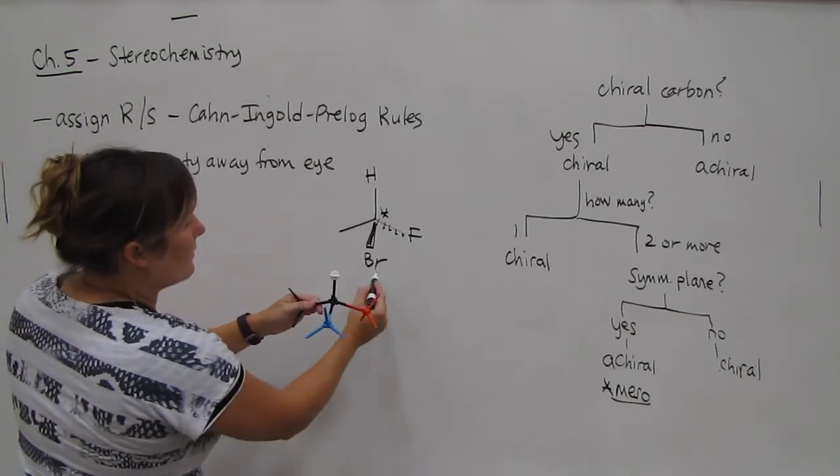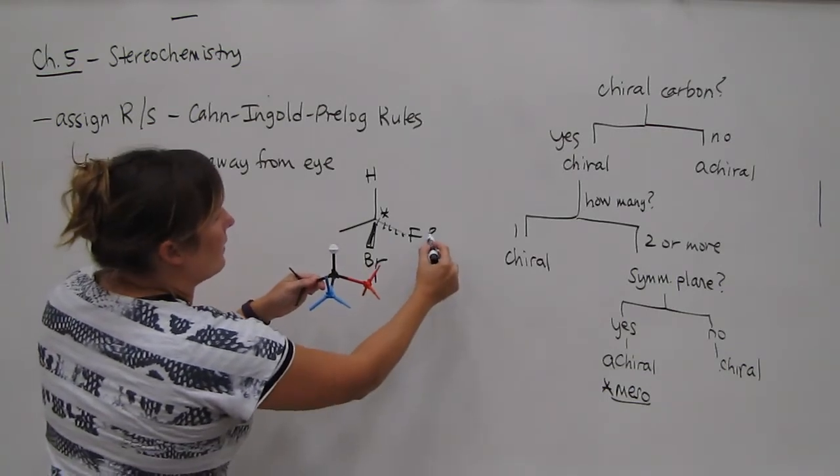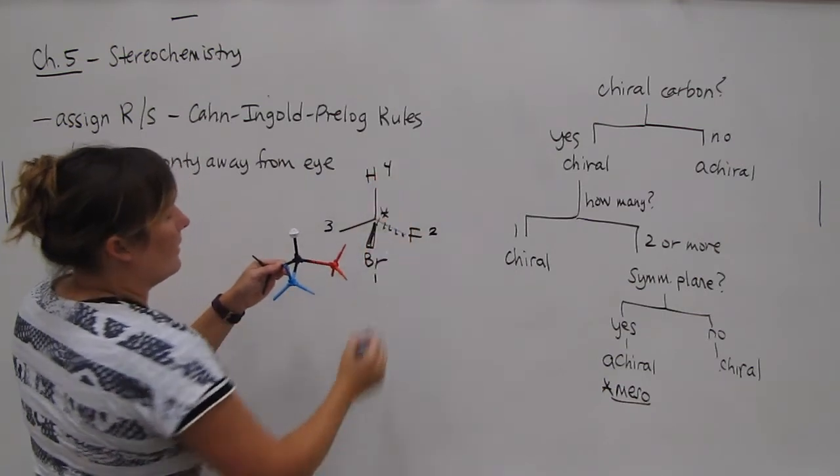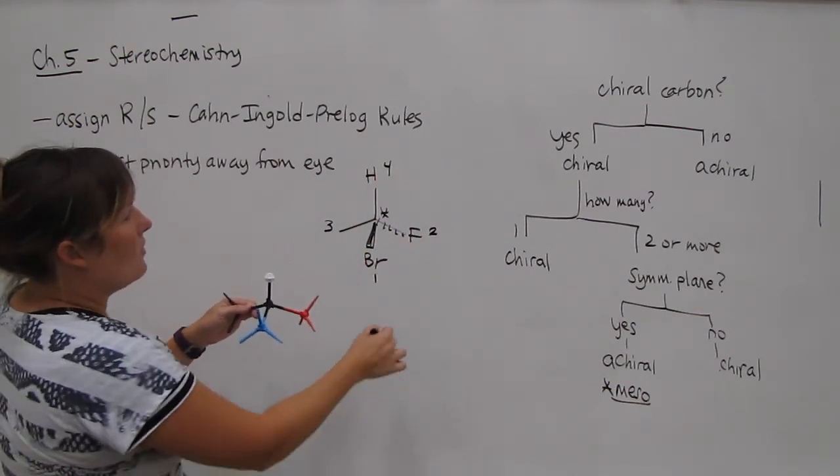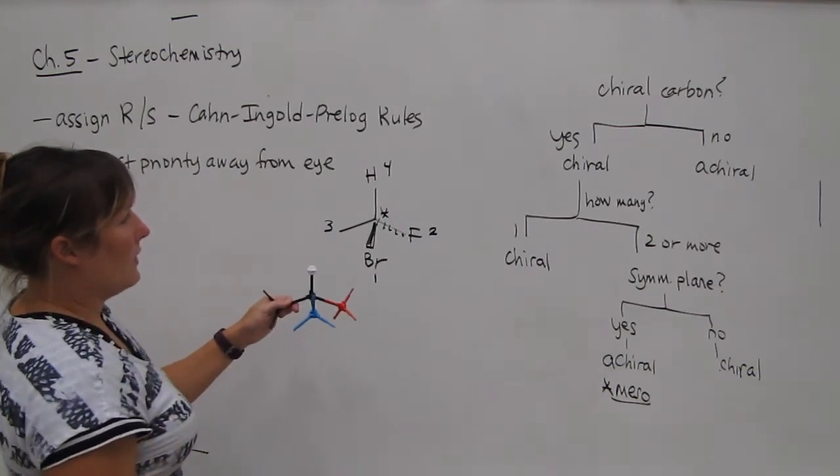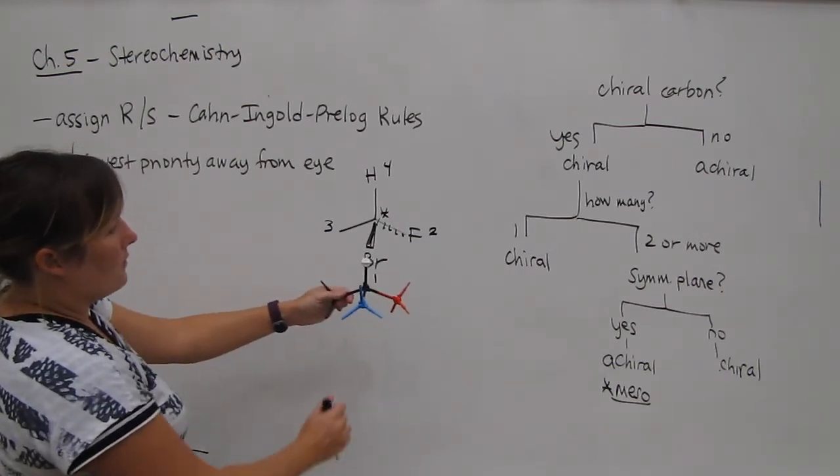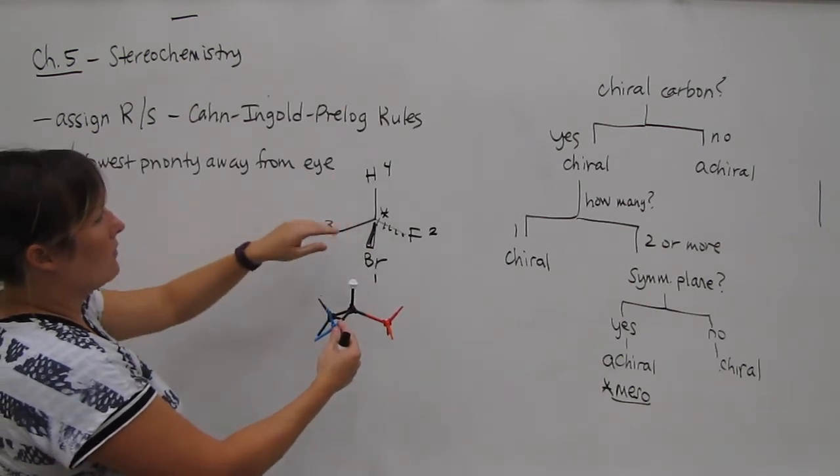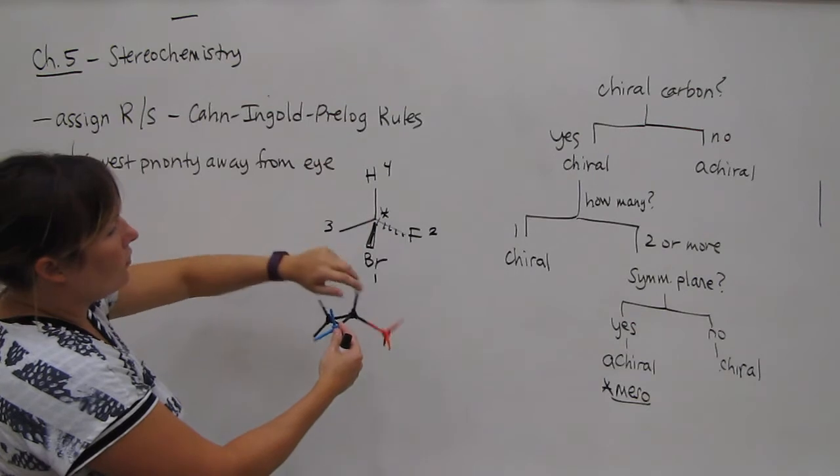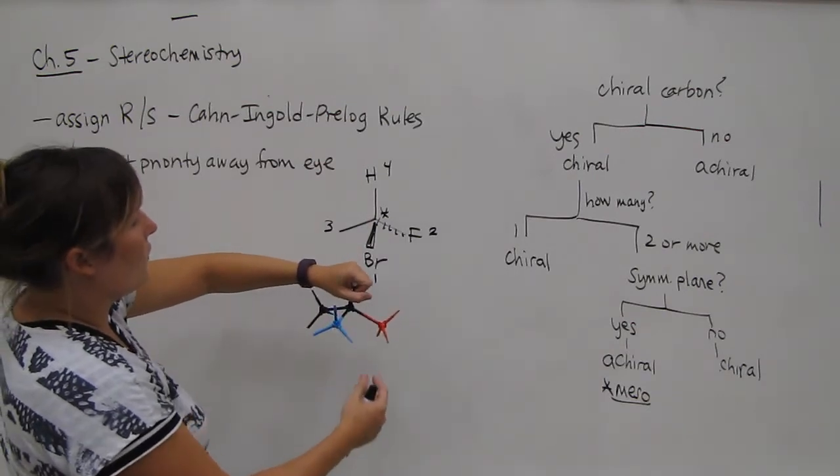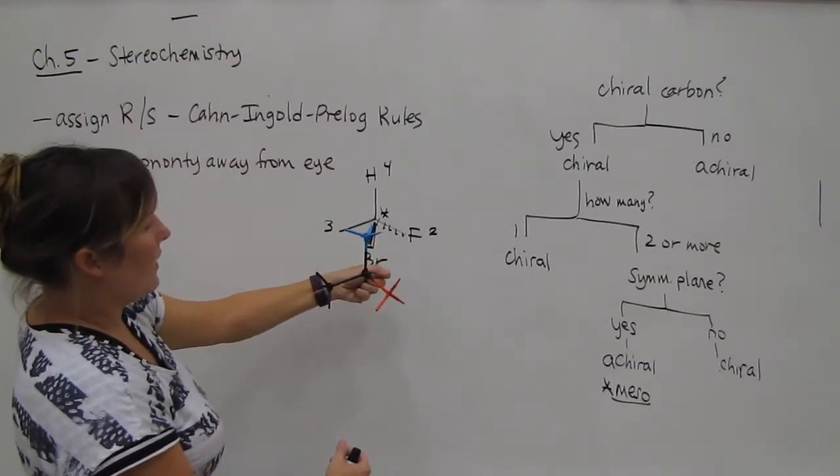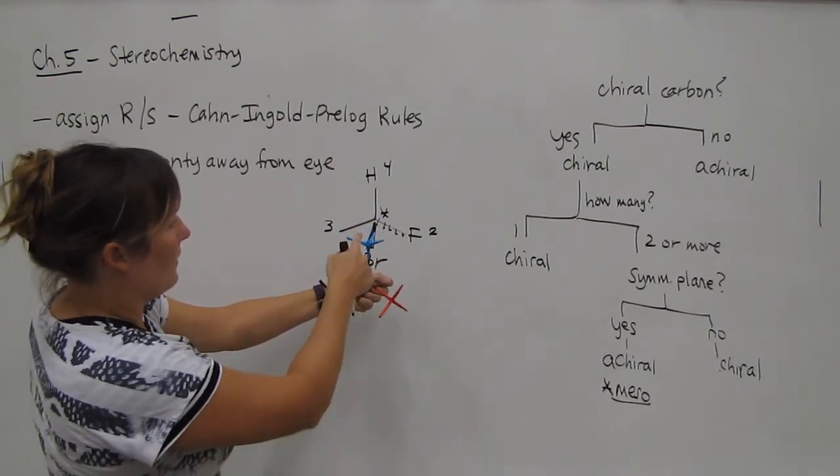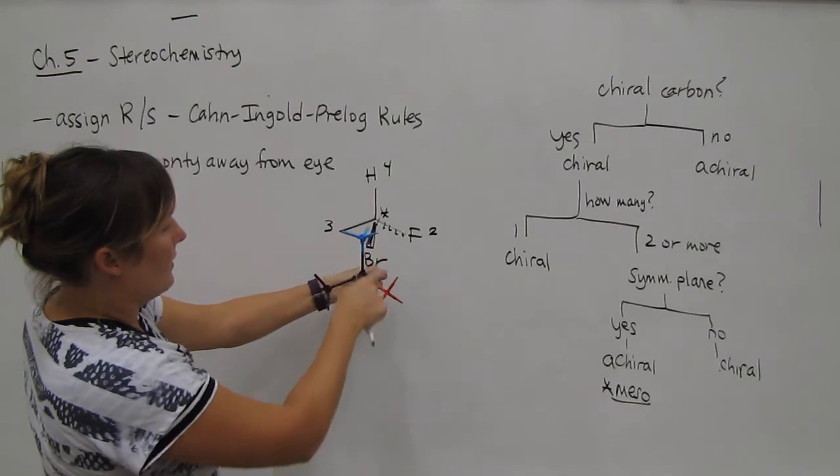When you assign priorities, bromine would be first, fluorine would be second, carbon would be third, and hydrogen would be last. When you make the circle here, it might not be clear what to do. So if you just have a quick model that you have stand for the molecule or the center you're looking at, you want to hold the lowest priority, which is 4, and turn it away from your eye, and then assign. So this is bromine, fluorine, carbon. 1, 2, 3, R.